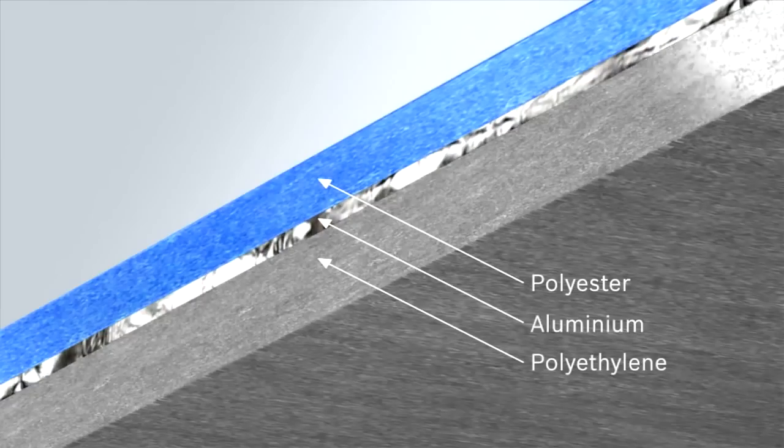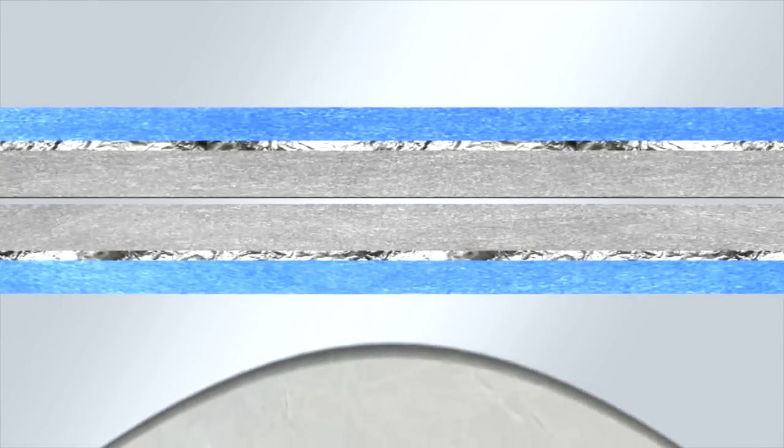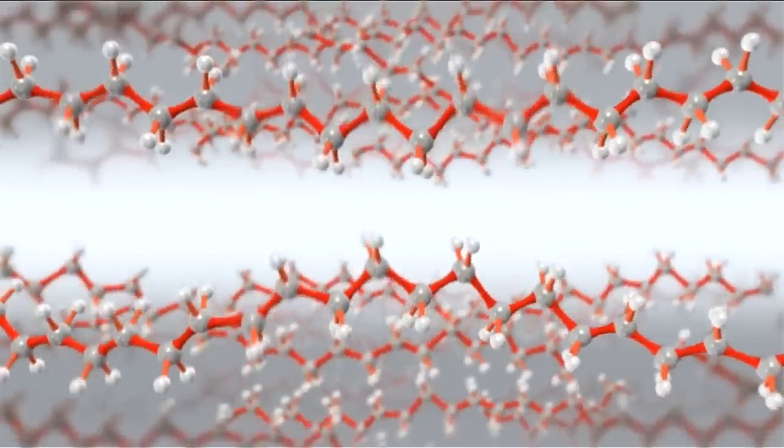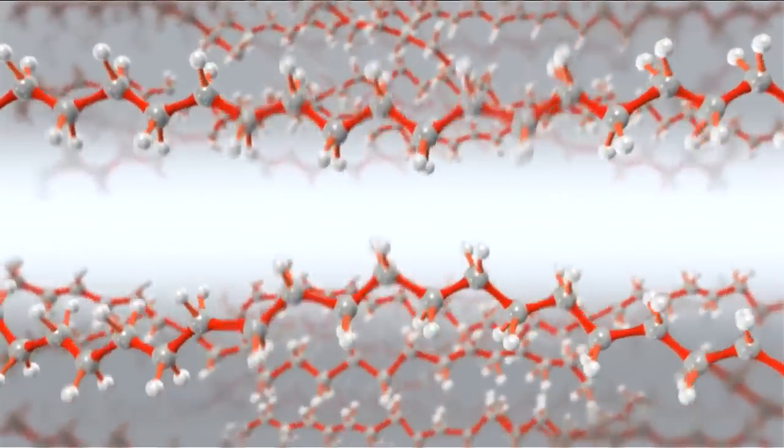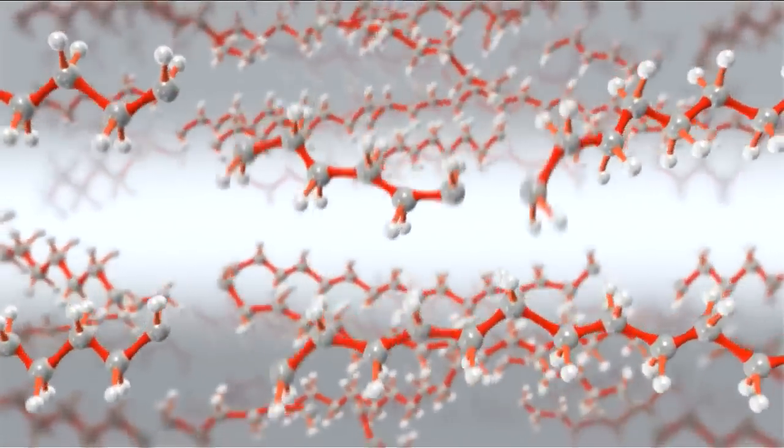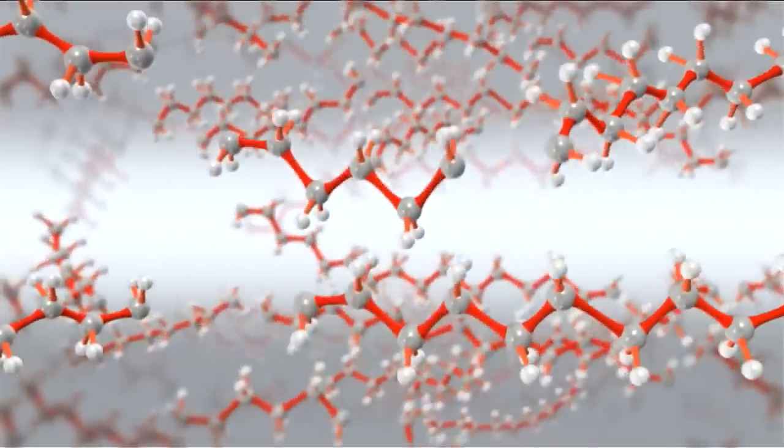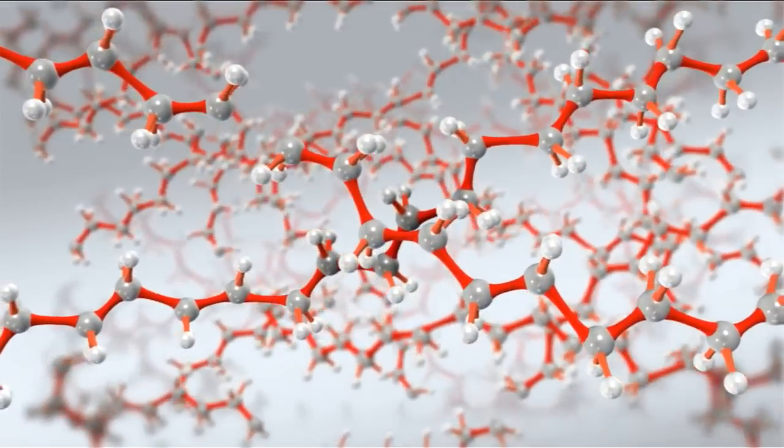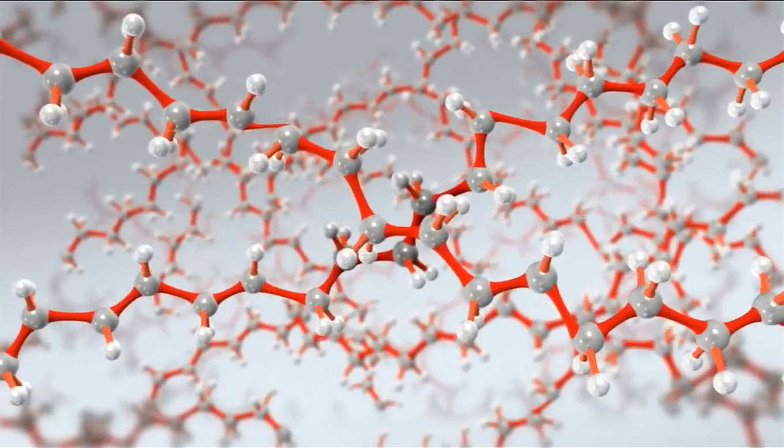Sonotrode and anvil are finally adjusted to a tolerance of microns and ensure precise compression. Due to the surface friction, energy is generated between the foils. Ultrasonic sealing technology creates intramolecular friction. Connections between the molecules are broken and new constellations are created. The material is welded at the seam for highest tightness.